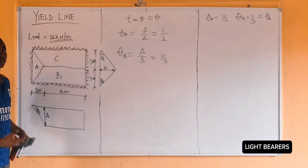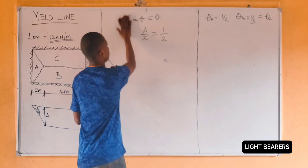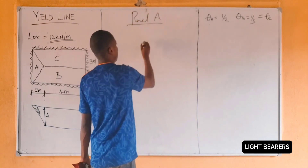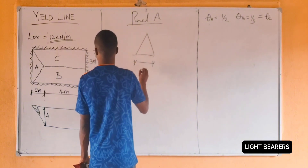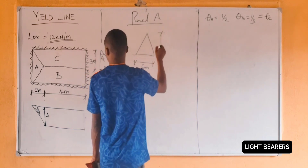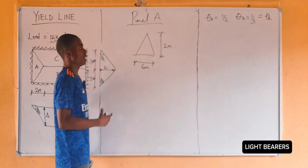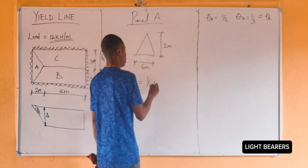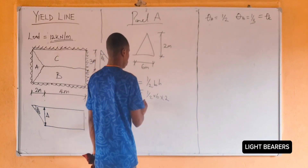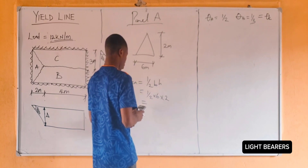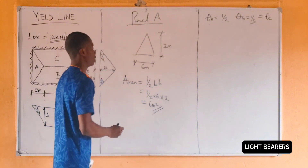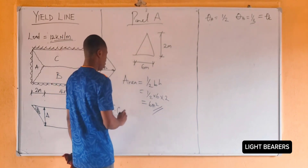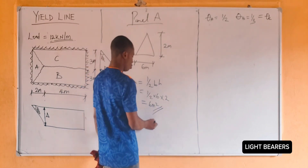Now let's pick panel A and calculate the unknown parameters. Let's find the area of panel A. The area of a triangle is half base times height, so we have half multiplied by 6 multiplied by 2, which gives us 6 meters squared. Now let's find the center of gravity for panel A. Since panel A is a triangle, the center of gravity is delta over 3. Delta is 1, so we have 1 over 3.